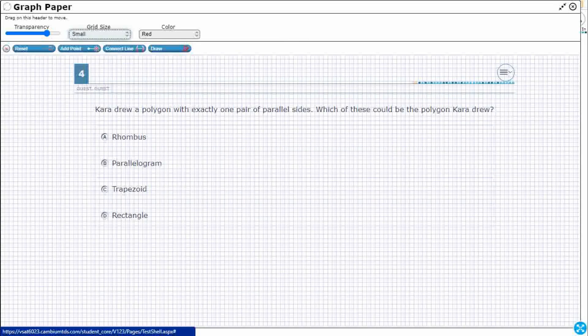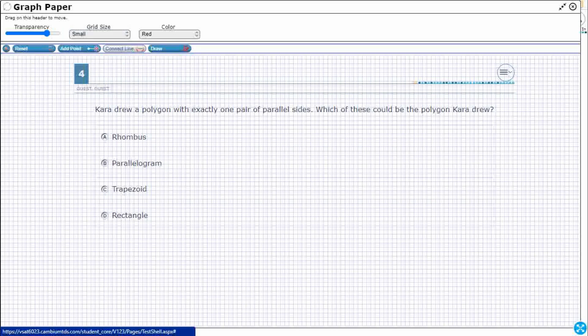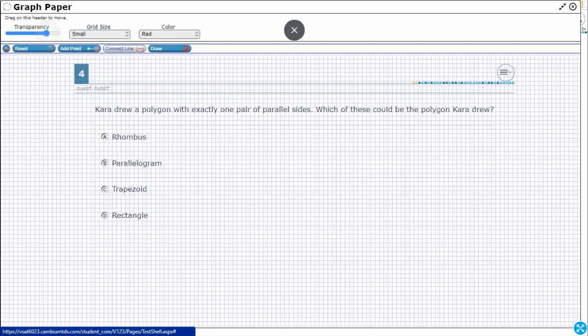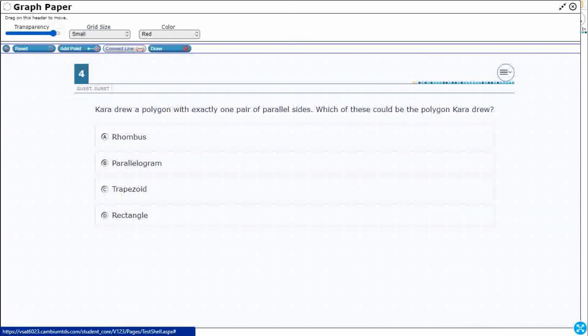We can go ahead and shrink our grid size, make it kind of small like that. Because if we're wanting to draw some things, we could use this connect line feature and that's going to let us draw some straight lines. Since we're dealing with shapes that have straight lines, let's go ahead and figure these out.